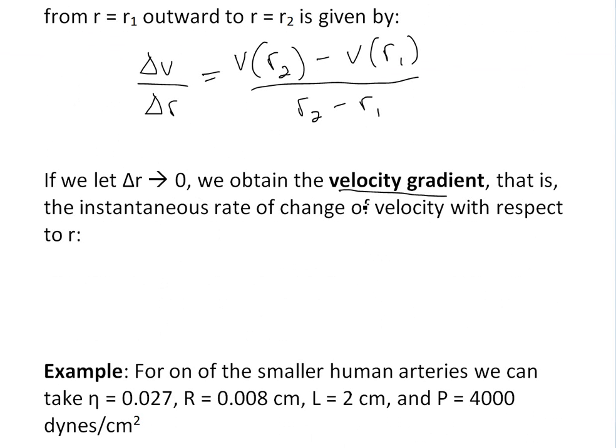This is the instantaneous rate of change of velocity with respect to r. We can write the velocity gradient as the limit as delta r approaches zero of delta V over delta r, which is just the definition of derivative: dV/dr.